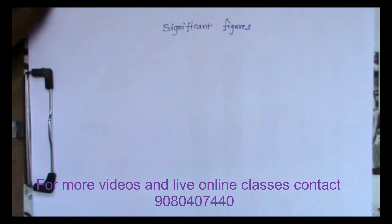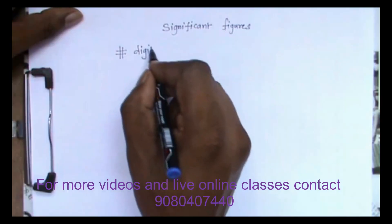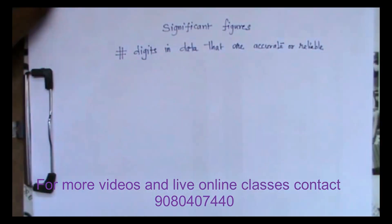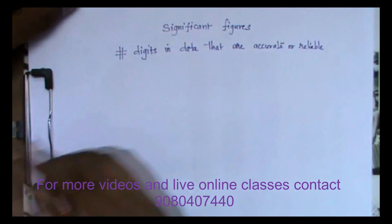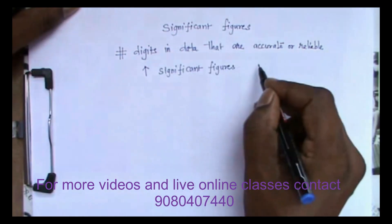In this video we are going to discuss significant figures. It is a simple topic, but you need to remember a few rules to solve problems based on significant figures. Significant figures are the number of digits in scientific data that are reliable or accurate. When we have more significant figures, the accuracy will be very high — higher the significant figure, higher will be the accuracy.